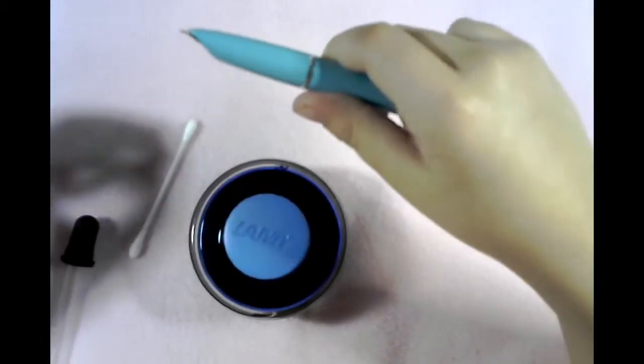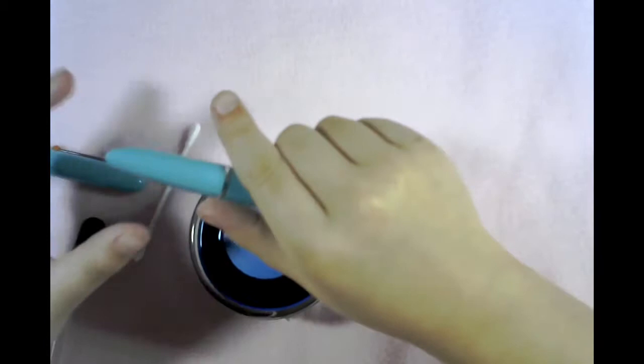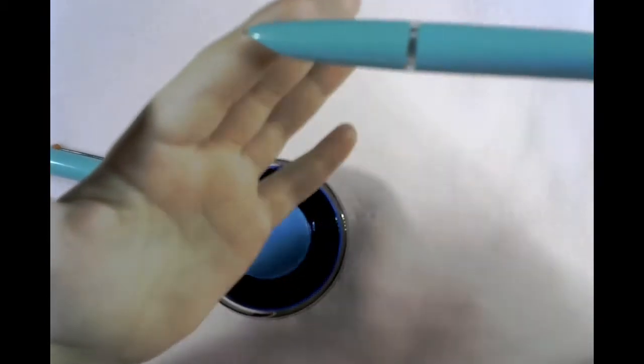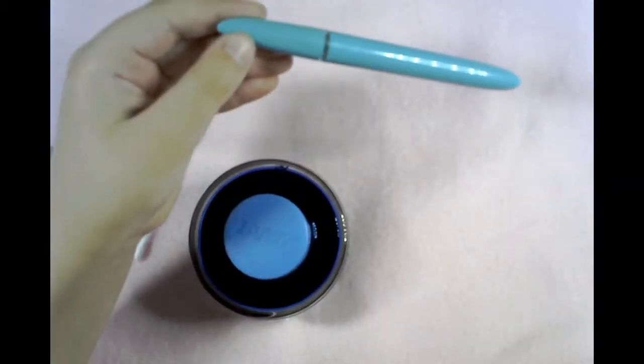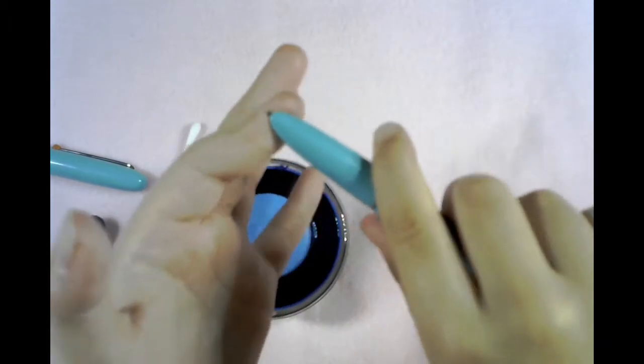The cap pops open. This is another different kind of nib. It's called a hooded nib. You can hardly see the actual nib but trust me it's in there. You can see a little bit there. I don't know if it's steady but it's there.